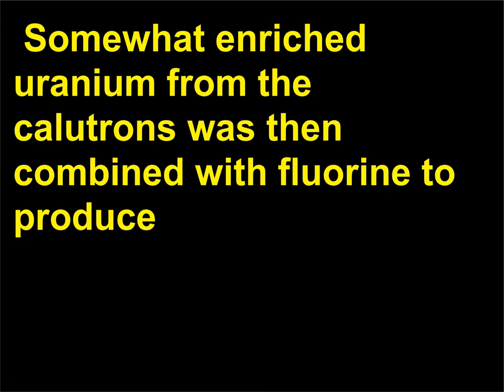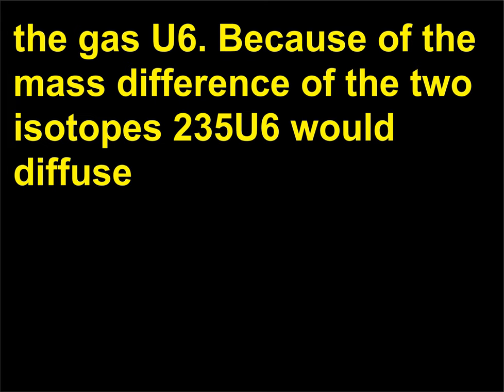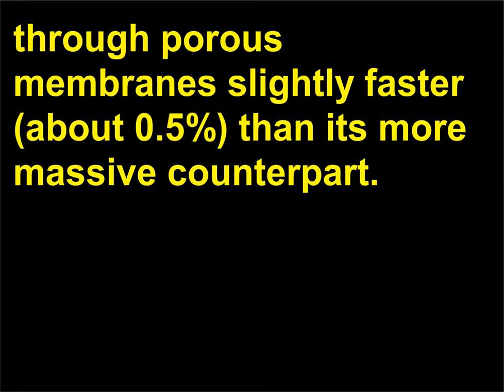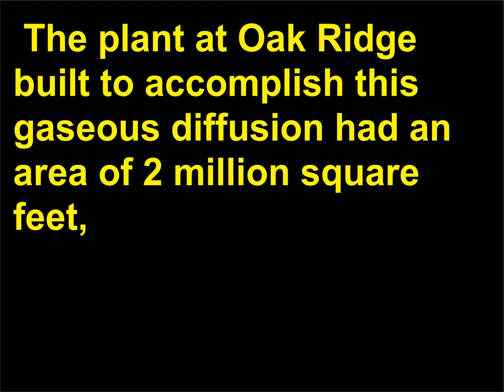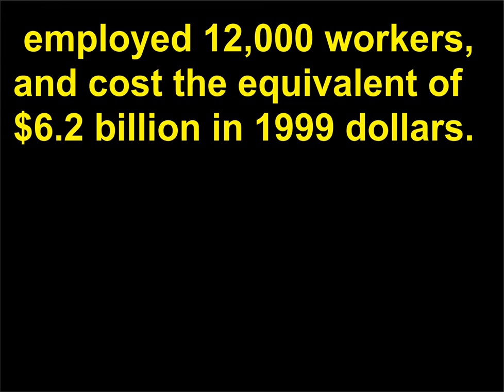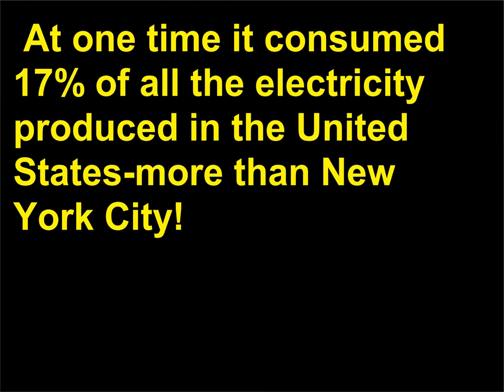Somewhat enriched uranium from the calutrons was then combined with fluorine to produce the gas UF6. Because of the mass difference of the two isotopes, 235-UF6 would diffuse through porous membranes slightly faster, about 0.5%, than its more massive counterpart. Thousands of separations were needed to produce weapons-grade uranium, 85-90% 235U. The plant at Oak Ridge built to accomplish this gaseous diffusion had an area of 2 million square feet, employed 12,000 workers, and cost the equivalent of $6.2 billion in 1999. At one time it consumed 17% of all the electricity produced in the United States, more than New York City.